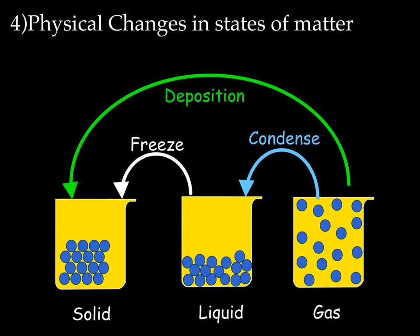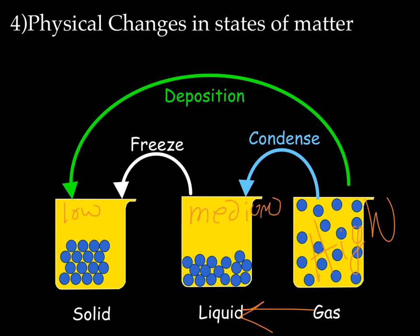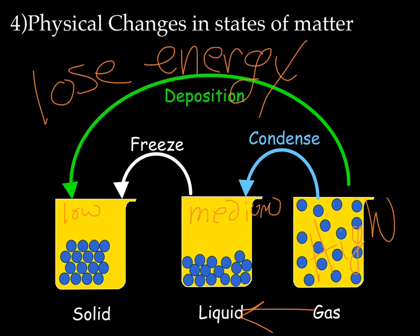We can also go the other way. Going from a gas to a liquid is called condensation. Going from a liquid to a solid is called freezing. And in some matter, going directly from a gas to a solid is called deposition. To go from a gas — high energy — to a liquid — medium energy — or from a liquid to a solid — low energy — you need to lose energy. Going from gas to liquid to solid, you are losing energy each step of the way.